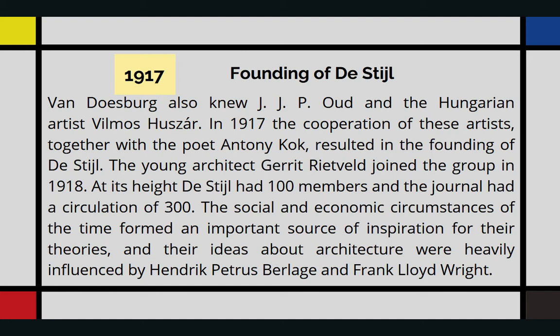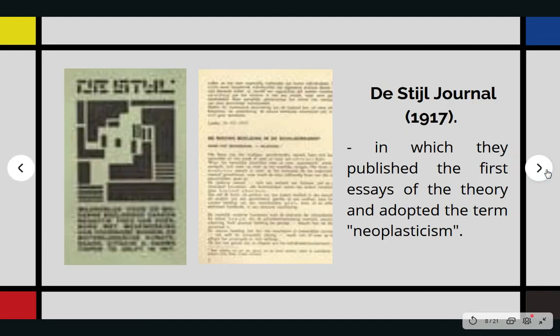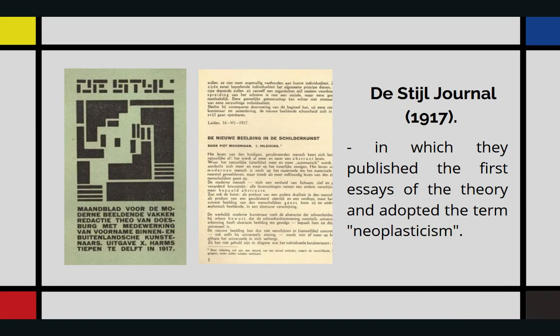The social and economic circumstances of the time formed an important source of inspiration for their theories, and their ideas about architecture were heavily influenced by Hendrik Petrus Berlage and Frank Lloyd Wright. During those years, the group was still relatively homogeneous. Although van der Leck left in 1918 due to artistic differences of opinion, manifestos and neoplasticism in painting were published in the journal of De Stijl. These are some photos of the De Stijl journal published in 1917, in which you can read the first essays of the theories that adopted the term Neoplasticism.